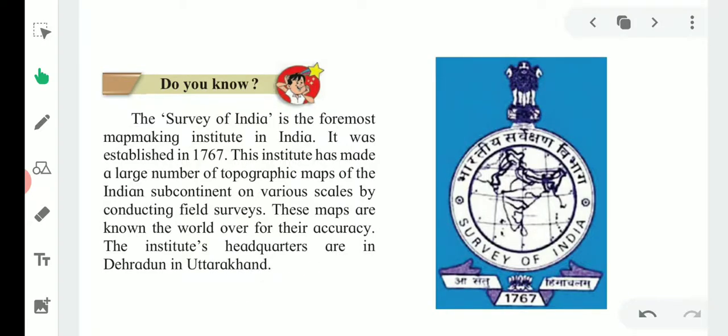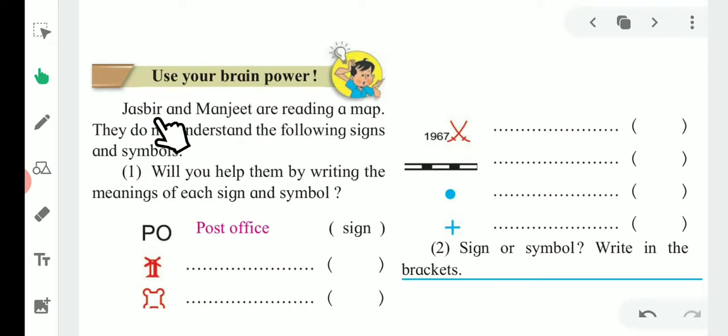Use your brainpower: Jasper and Manjeet are reading a map. They do not understand the following signs and symbols. Will you help them by writing the meaning of each sign and symbol? You have to write name, sign and symbol, and mention that is it a sign or a symbol in this record. First one, as you can see, the example is given here. Post office is a sign. Second one is lighthouse, which is a symbol. Then fort, which is a symbol too. Next one is battlefield, that is a symbol. Railway, that is a sign. Well, well is a sign, and spring is a sign. Sign or symbol, write in the bracket. You have to note down this activity in your notebook.